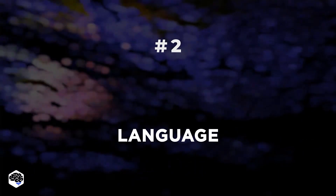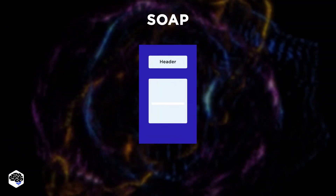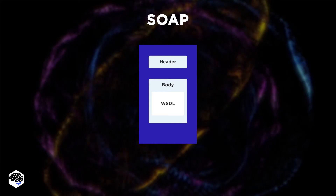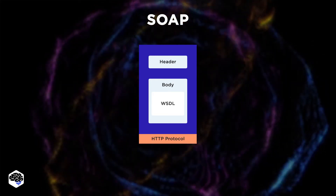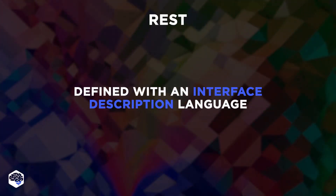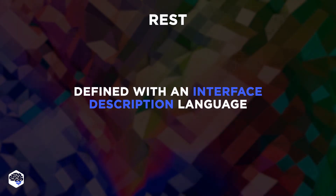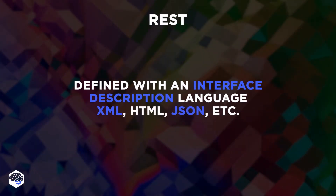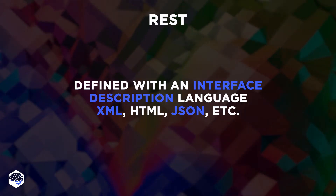The second point to consider is language. The basic components of SOAP are the envelope, the body, the text of the request itself, sender information, and request details. SOAP also has a type system. REST APIs are defined with an interface description language. During development, software engineers use XML, HTML, JSON, and other ways of expression.